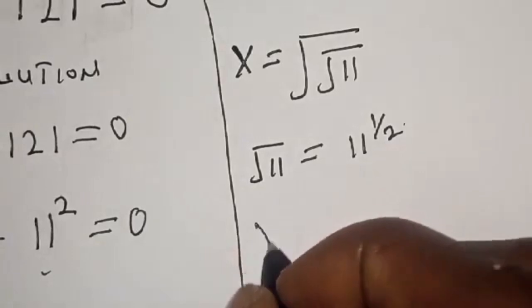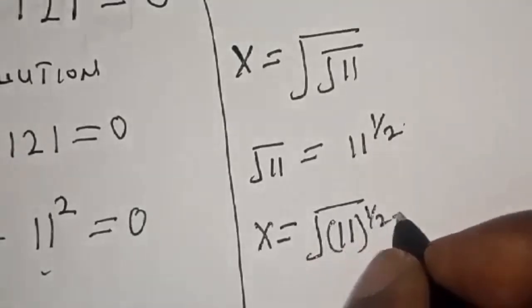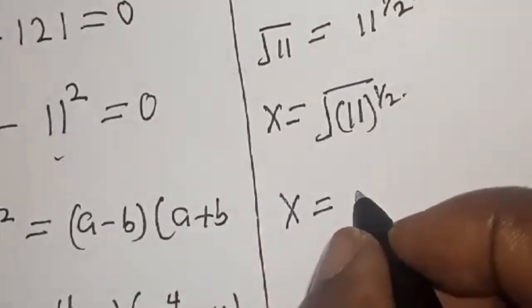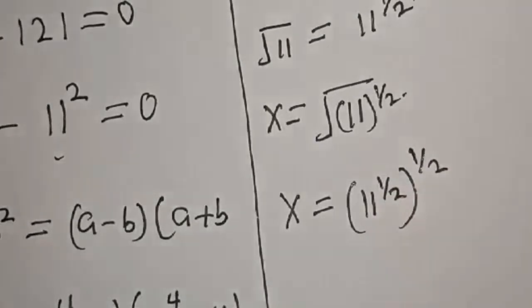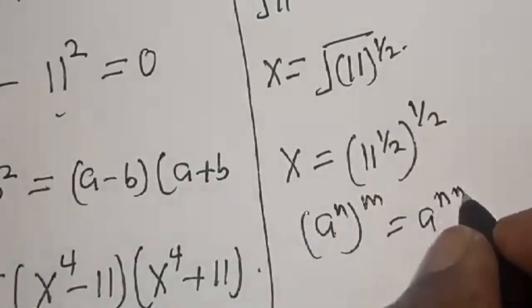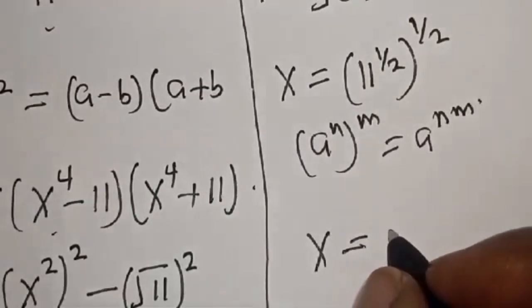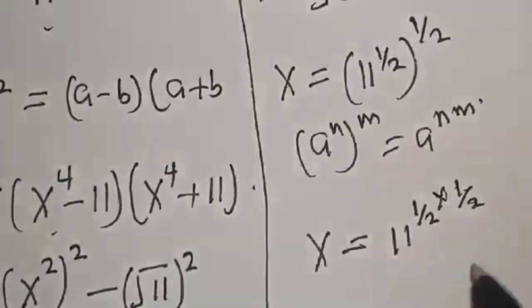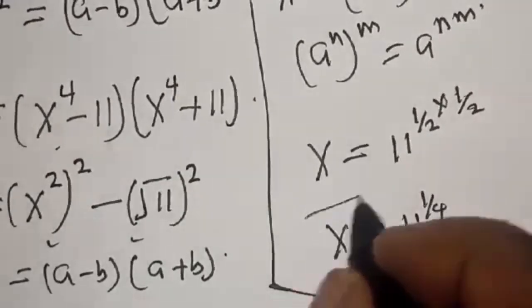Then we have s is equal to the square root of 11 raised to power 1 over 2, which is 11 raised to power 1 over 2, raised to power 1 over 2. We have s equal to 11 raised to power 1 over 2 multiplied by 1 over 2. Then s is equal to 11 raised to power 1 over 4. That is our final answer.